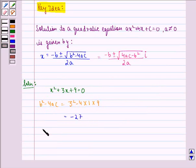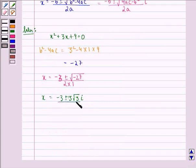Therefore, x is equal to minus 3 plus minus under the root minus 27, the whole divided by 2 into 1. Then x is equal to minus 3 plus minus 3 times root 3i divided by 2.